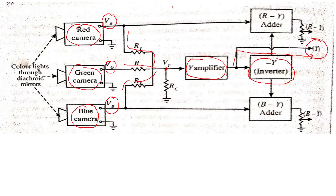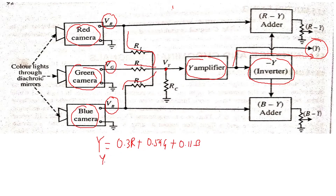The values of resistances R1, R2, and R3 in the matrix are chosen so that the three color voltages are added in the ratio of 0.30 for red, 0.59 for green, and 0.11 for blue to give the Y signal equal to one. The Y signal, which is the brightness signal, equals 30% red plus 59% green plus 11% blue. Y equals one when the picture is white and Y equals zero when the picture is dark.